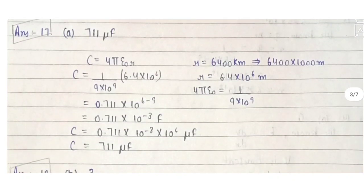Question 17: the capacitance of the Earth. There is a proper derivation and calculation given in the book. The direct answer to learn is 711 microfarads — that is the capacitance of the Earth.